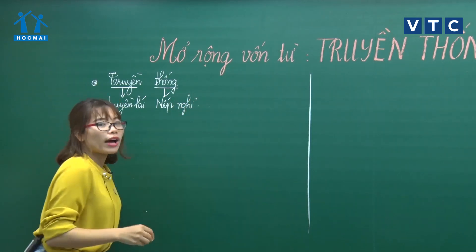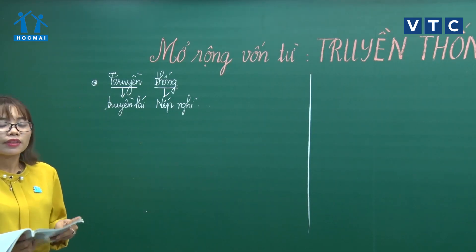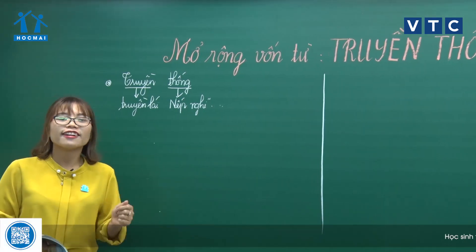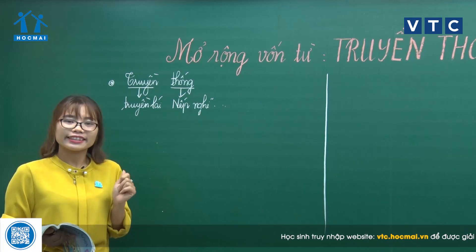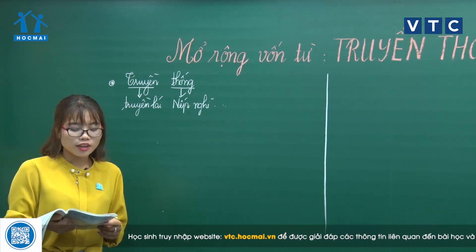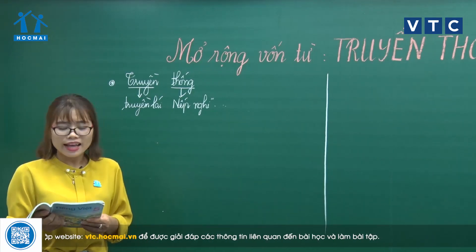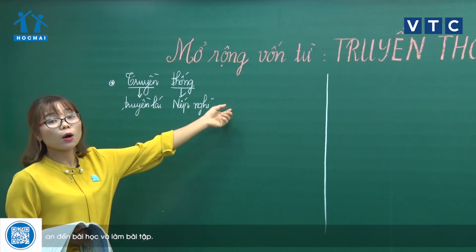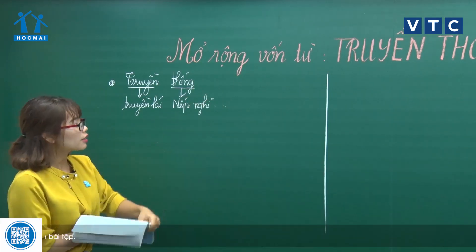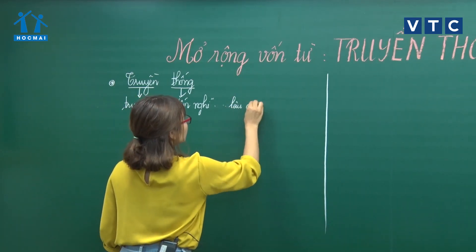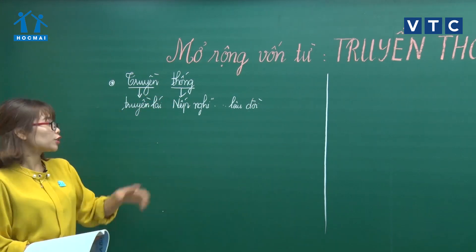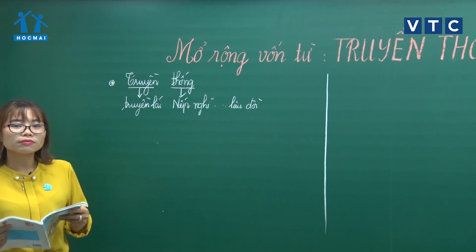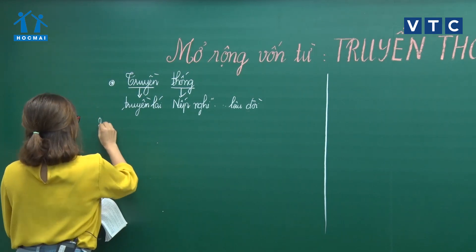Những phong tục, tập quán của cha ông. Vì vậy lưu ý: nếu như chỉ nói đến phong tục và tập quán của tổ tiên ông bà thì người ta sẽ không nhìn thấy cái sự lưu truyền, sự truyền lại từ đời này sang đời khác. Vì vậy đáp án C là đáp án sát nhất: chỉ lối sống và nếp nghĩ đã hình thành từ lâu đời và được truyền từ thế hệ này sang thế hệ khác. Truyền thống là được truyền từ đời này sang đời khác, chứ không phải chỉ có ở đời ông bà tổ tiên. Bước vào bài tập số 2, trang 82.